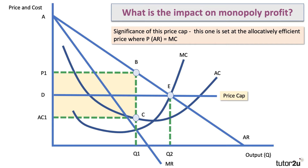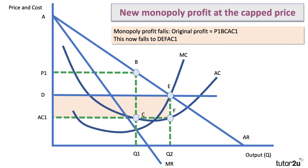You can set the cap as high or low as you want — the lower the cap, in theory, the bigger the impact on the consumer. What's the impact on monopoly profit? The original profit is shown by the yellow shaded area. At the new price D, the level of profit will go down. Original profit P1BCAC1 now falls to DEFAC1 — a fall in profit. You can see the price cap will have a significant impact on the supplier.